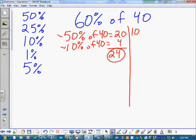There is another way to do it. Okay, I like working with 10%, actually. It's my favorite. So 10% of 40 is 4. How many 10% are in 60%? There's six of them. So we go 6 times 4 would give us 24. That's 60% of 40.